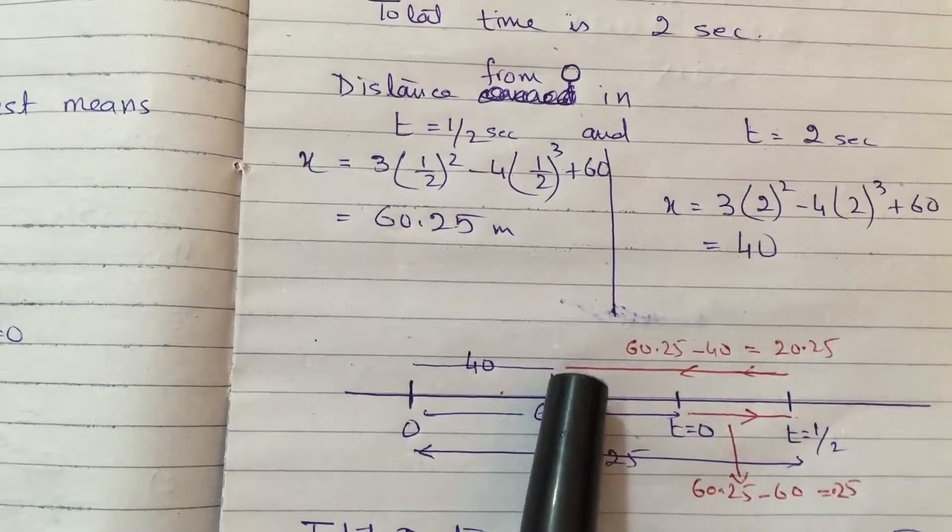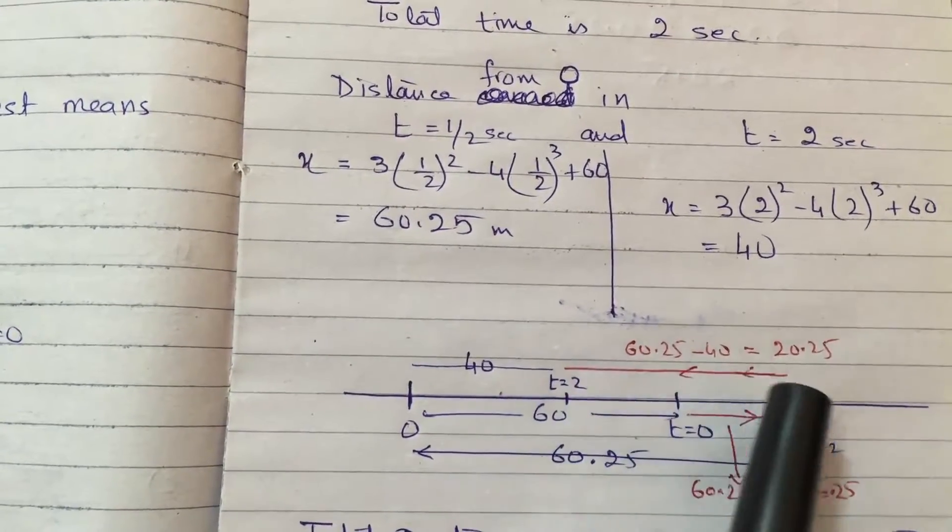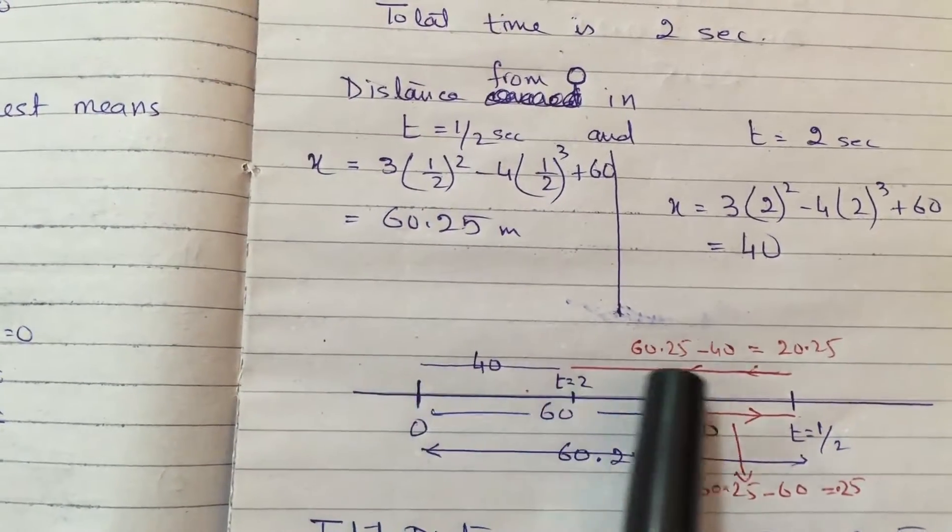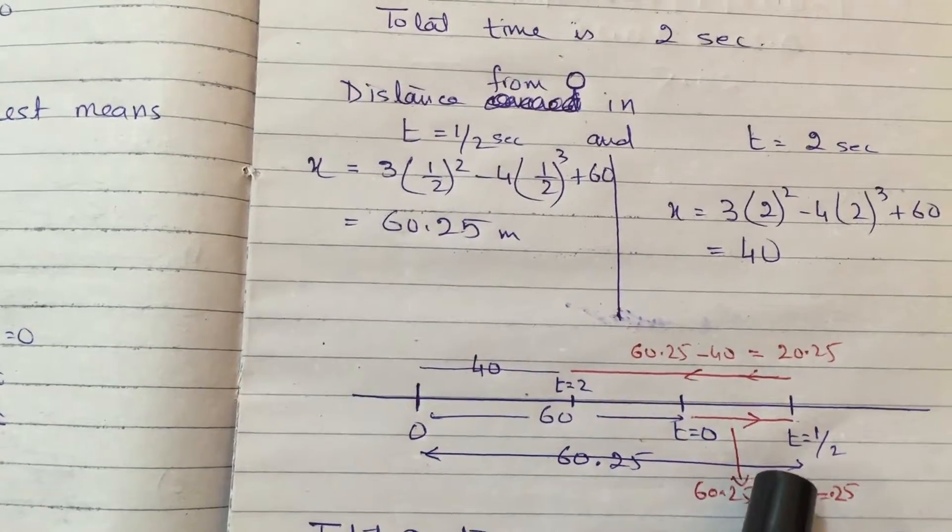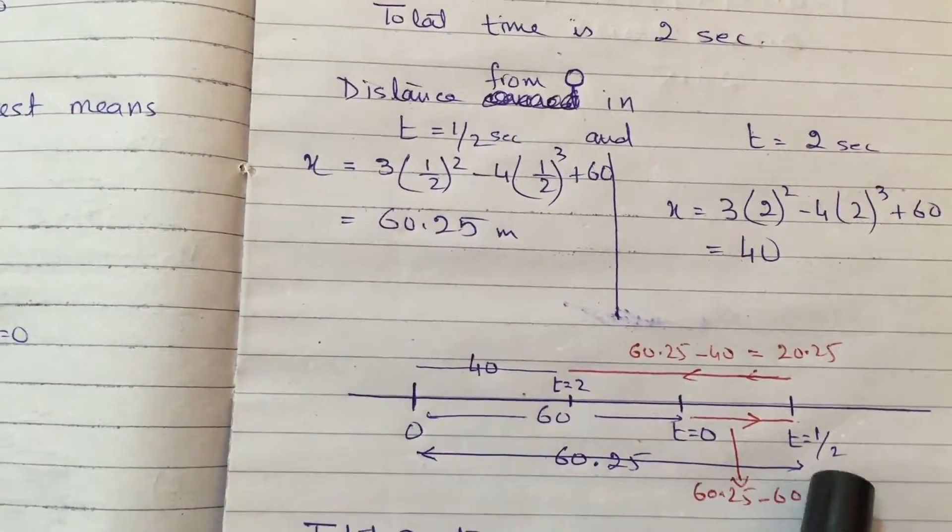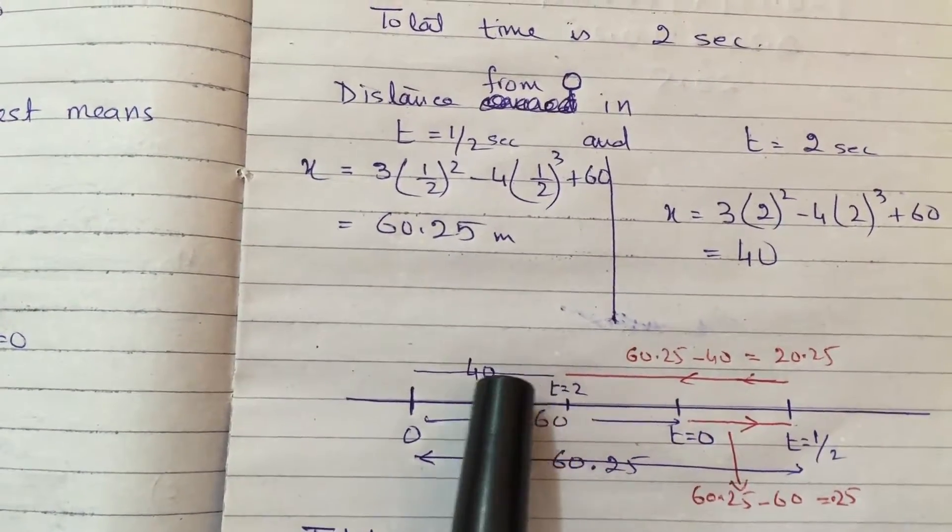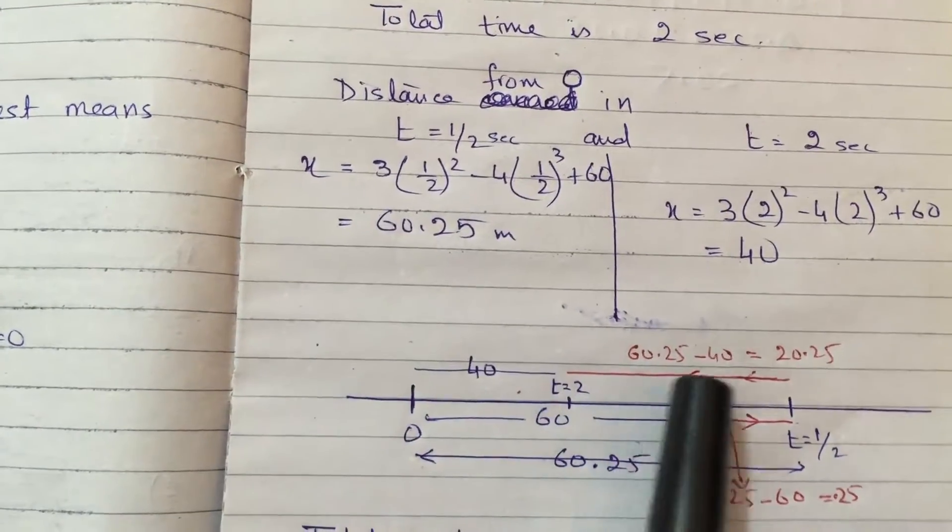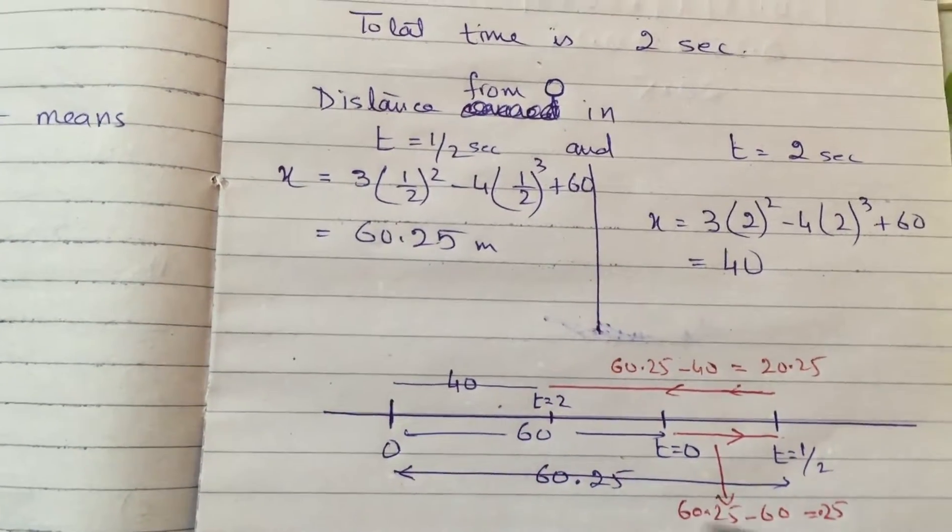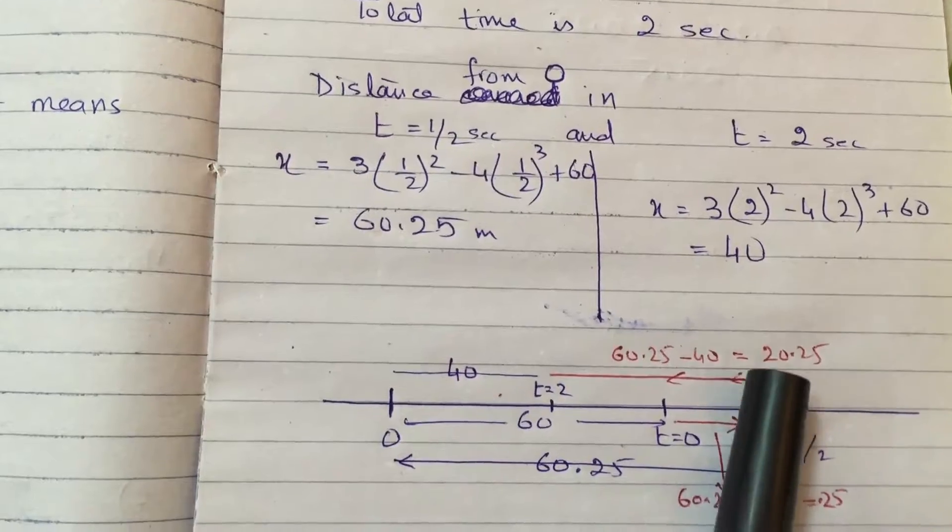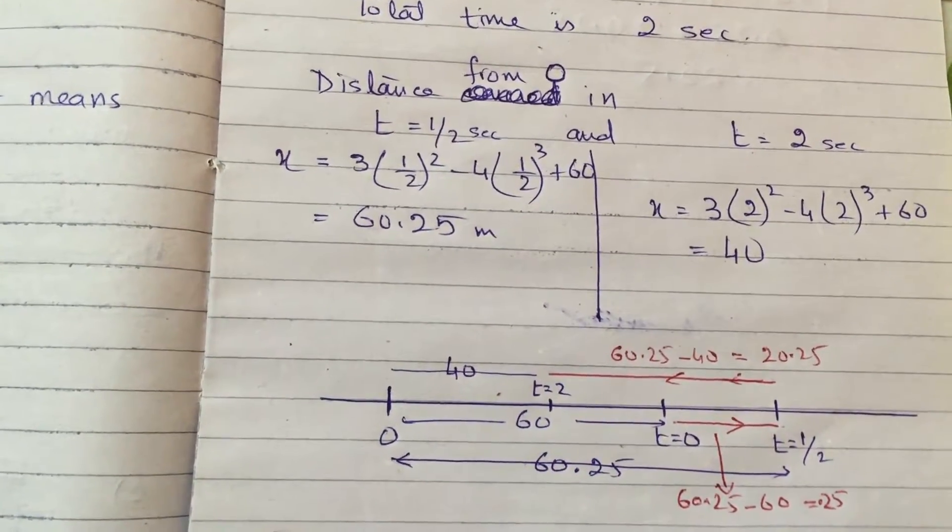Actual distance covered is this much. So this much distance is 60.25 because this whole is 60.25, which we have gotten from here. So 60.25 minus 40 will give you 20.25. So the red line is telling you how much distance is actually covered by the particle in 2 seconds.